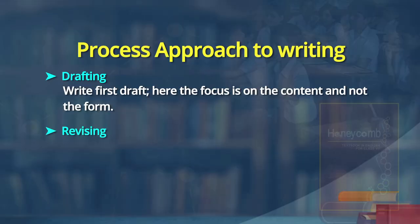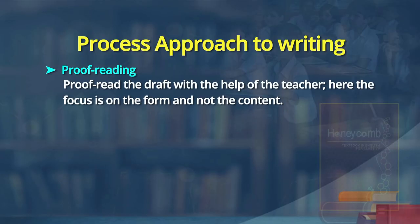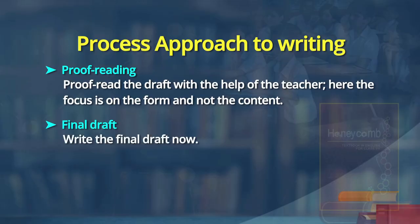When drafting, the ideas matter, not necessarily how good the language is — there may be some mistakes, so you revise it. Revise the first draft: improve it, add or delete ideas, and improve the language. Proofreading is the most important part — proofread the draft with the help of the teacher. Here the focus is on the form and not the content, meaning you look for spelling mistakes, grammar mistakes, and even punctuation mistakes like full stops and commas. Then write the final draft.